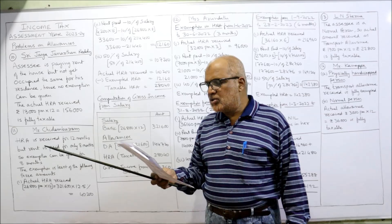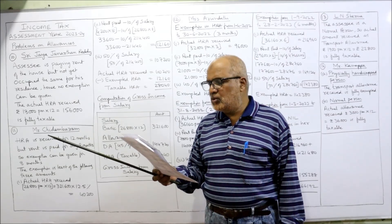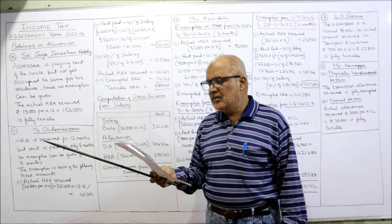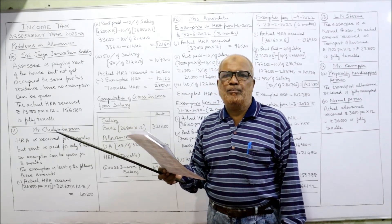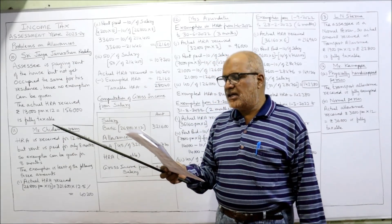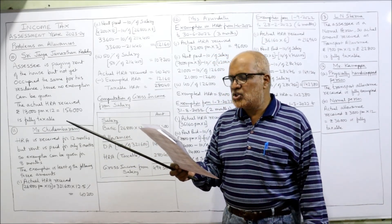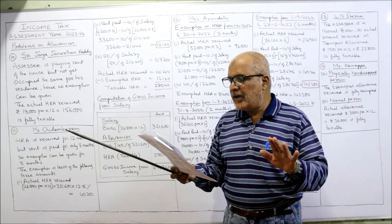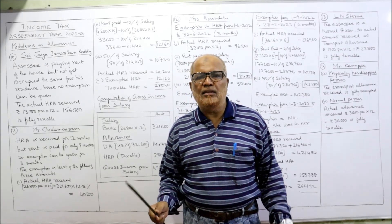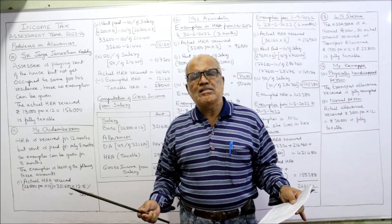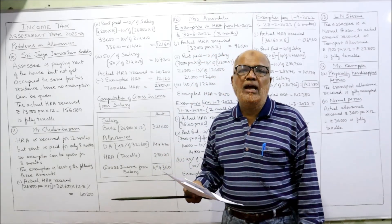Now the 11th problem. From the following particulars, calculate the gross income from salary of Mr. Chidambaram, a government employee working in Delhi, for the assessment year 2023-24. Basic pay ₹26,800 per month, DA 45% of basic, and HRA 12.5% of basic. He took a house on rent at ₹4,200 per month, but due to some litigation with the landlord, rent is not paid for the last four months of the year. The provision of Income Tax Act is: if the rent is paid, then only exemption will be allowed.